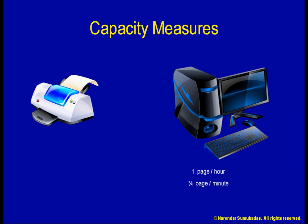Suppose I visit a copy center and see an employee there using a computer. It's not a very fancy computer — just a regular PC, and that too, a year old. I'm curious; it can't be too fast. How can they conduct their business with that slow computer? As I watch, the employee opens a 500-page document and sends it to the printer in less than a minute. Now that is one super-duper fast computer — it has a capacity of 500 pages per minute. I think you and I should both dump our computers and get that kind of computer, even if it's a year old.